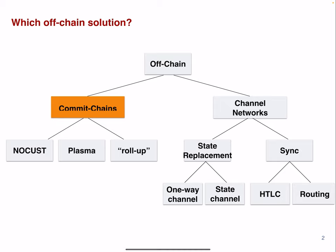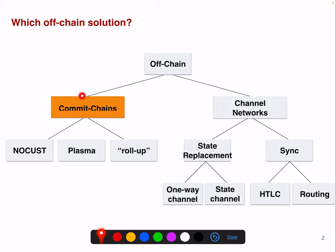In our taxonomy, these are Commit Chains. They can be nocast, rollups, or plasma.